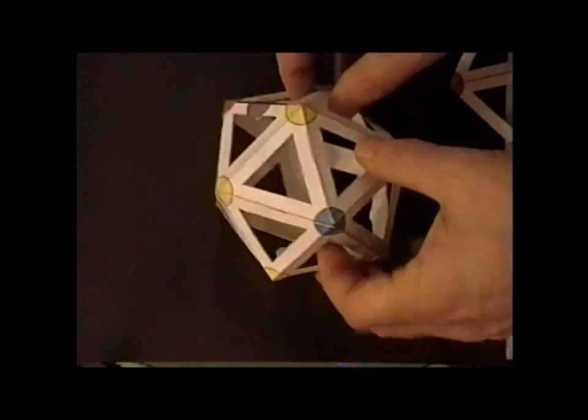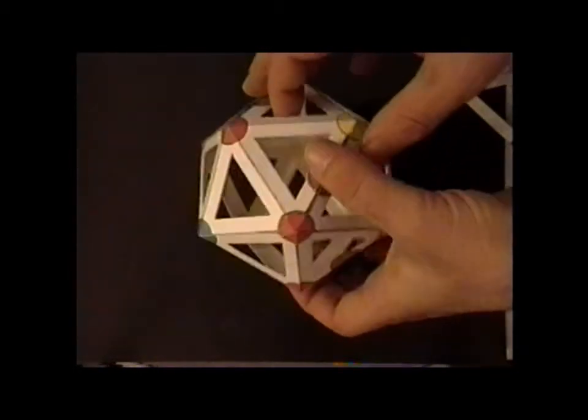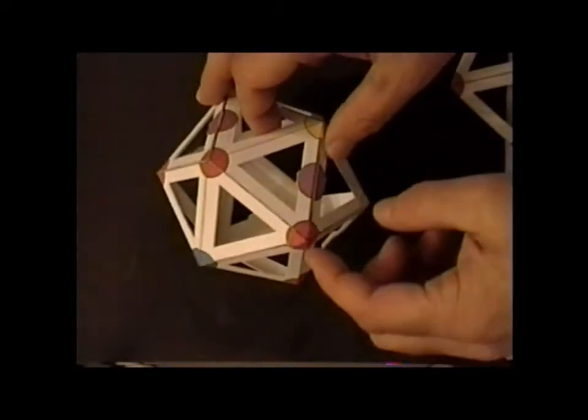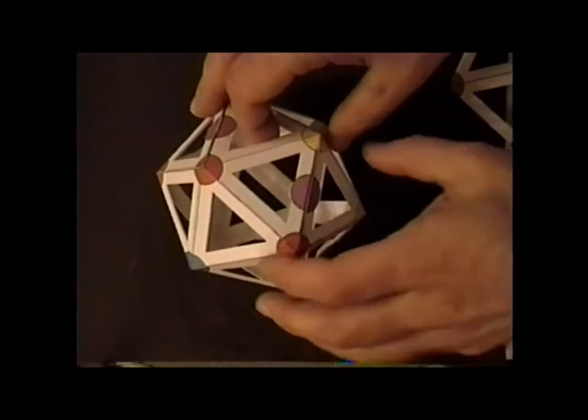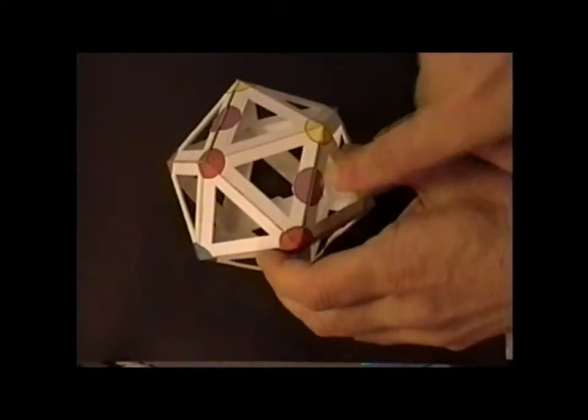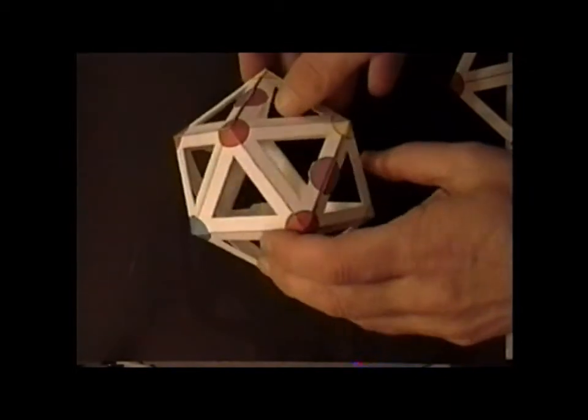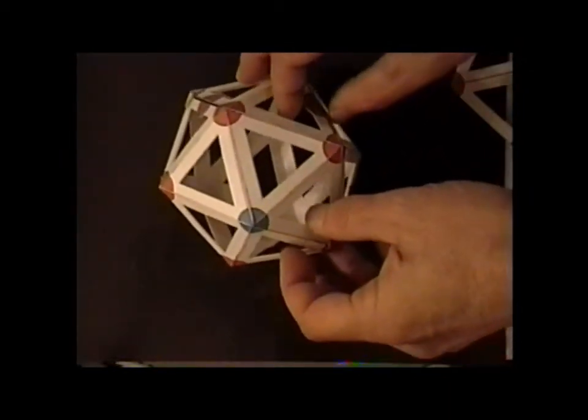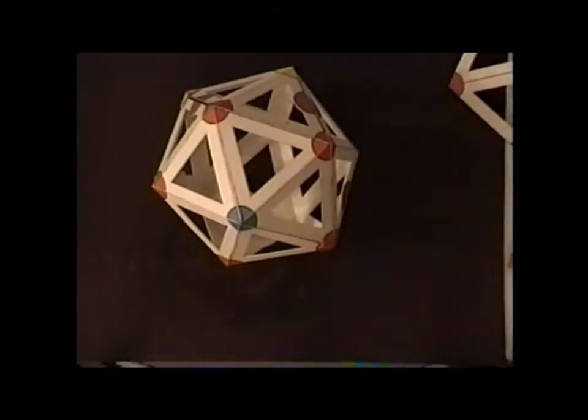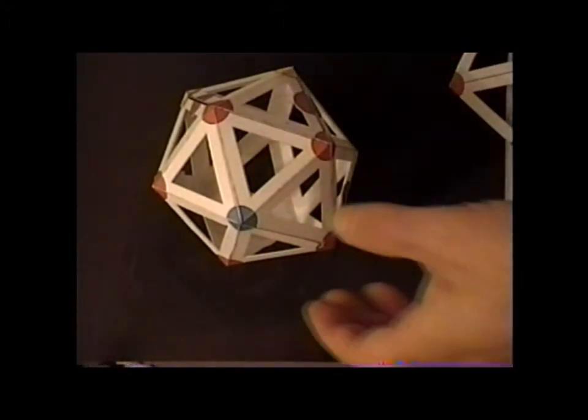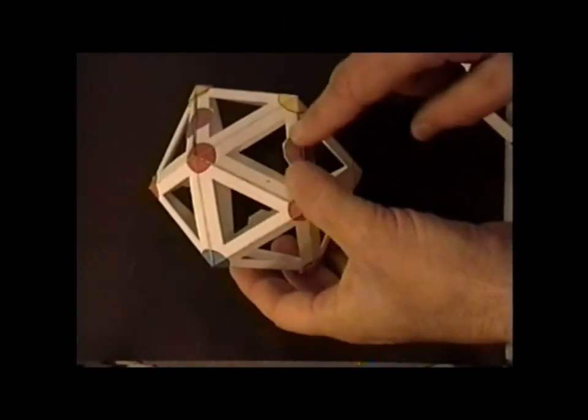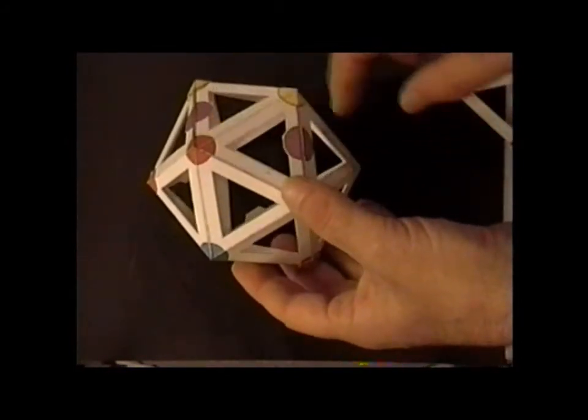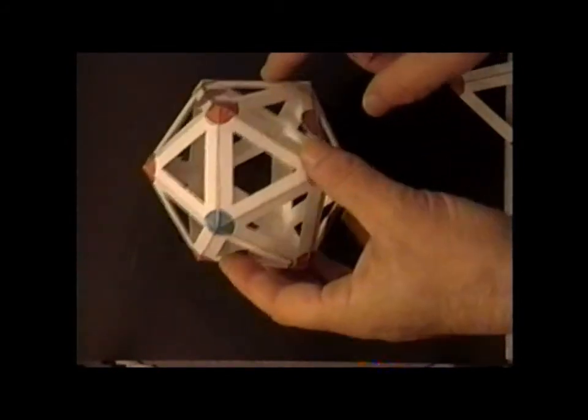But this becomes a different point group because it's not a D group anymore. Since this is red and this is yellow, there's no longer a C2 that would interchange these two positions. Therefore, this is an example of a group C5, not C5v, not C5h, just C5 because the presence of the bidentate ligand here, the purple things, removes any of the mirrors.